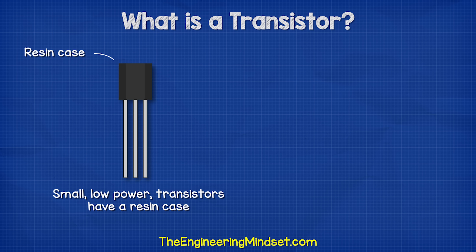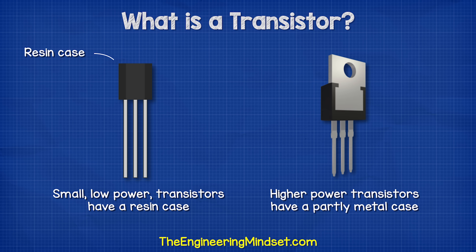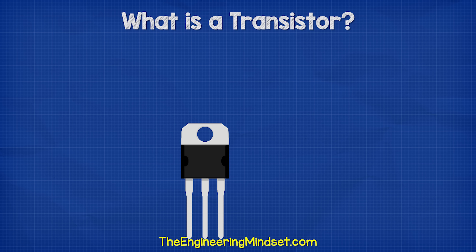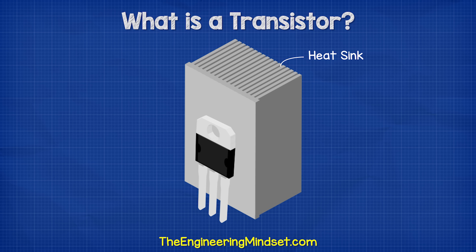Small low-power transistors are enclosed in a resin case to help protect the internal parts. But higher-power transistors will have a partly metal case, which is used to help remove the heat generated, as this will damage the components over time. We usually find these metal-body transistors attached to a heat sink, which helps remove the unwanted heat.